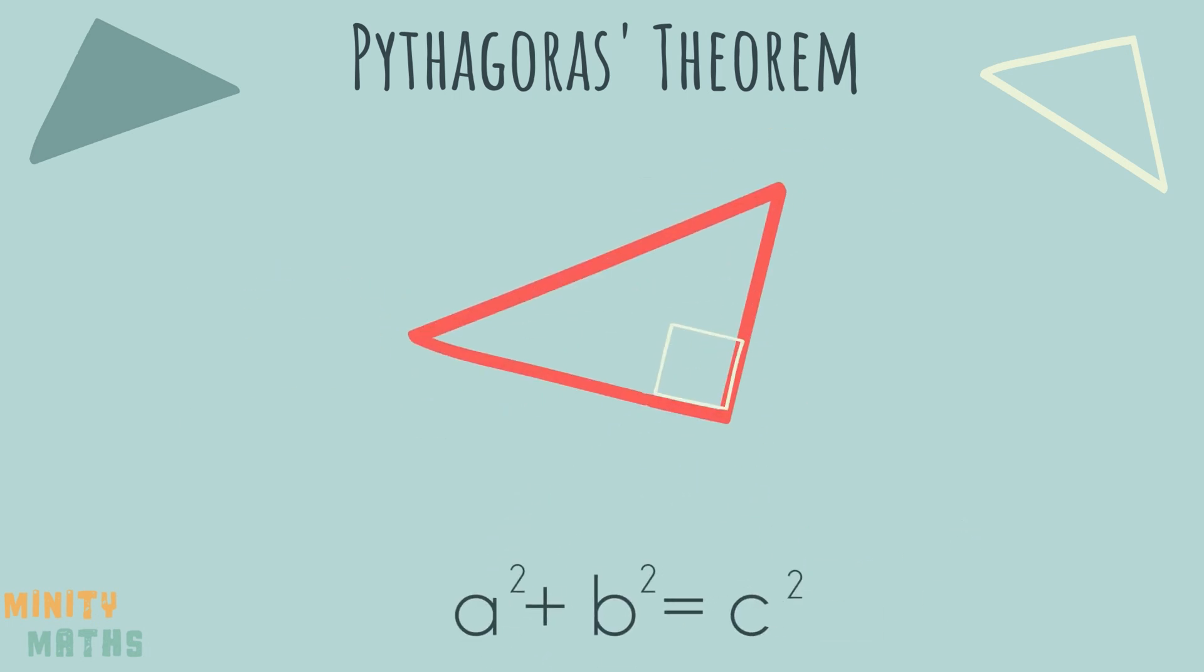Sometimes you will have been given the length of the hypotenuse, but either a or b will be missing instead. In this case, we use the same formula, but with a bit of rearranging.